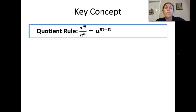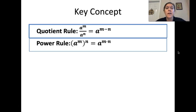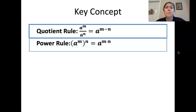The quotient rule: as long as I have the same bases and we are dividing — so a to the nth all over a to the nth — then we would subtract m minus n. Our power rule says if we have a power to a power, so a to the nth to the nth is equal to a to the m times n, so you multiply those together.